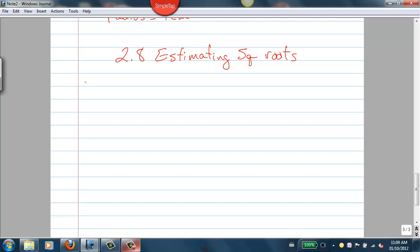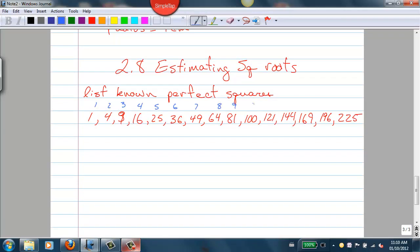Okay, the other part was estimating square roots. So estimating square roots, we know how to find the square roots of things like 100 and 64 and 9 and 16, because they're perfect squares.